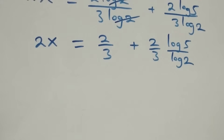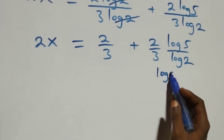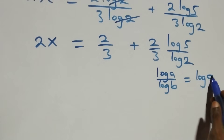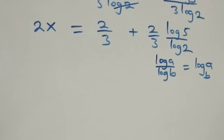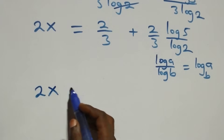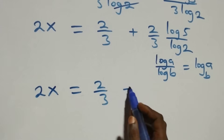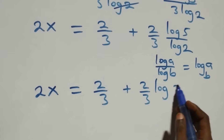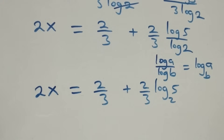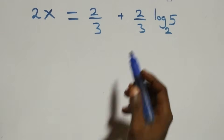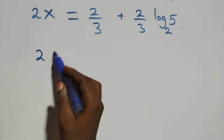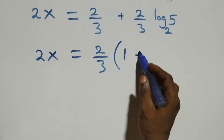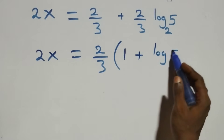Here we apply the change of base rule: when we have log A over log B, this is the same as log A to base B. So log 5 over log 2 becomes log 5 base 2. What we have becomes 2x equals 2 over 3 plus 2 over 3 times log 5 base 2.